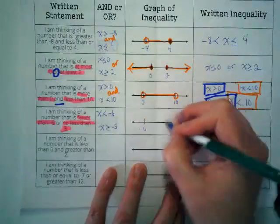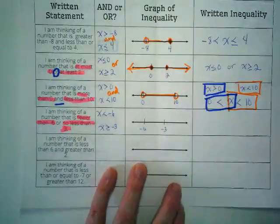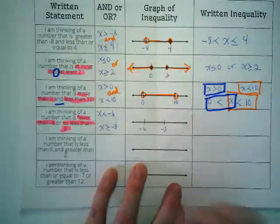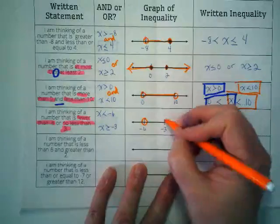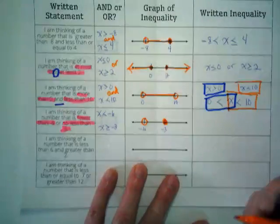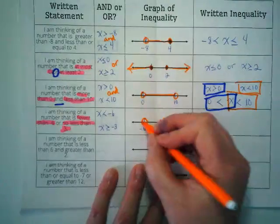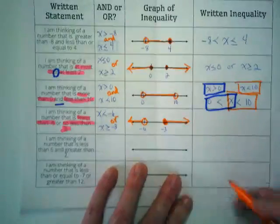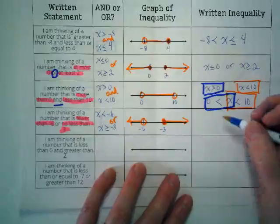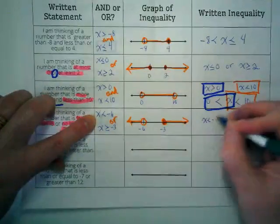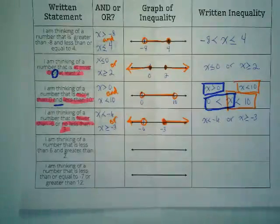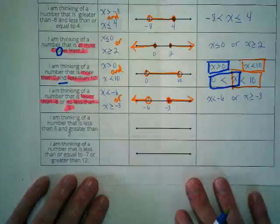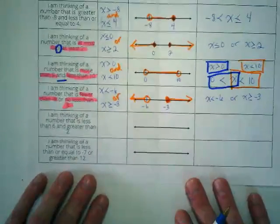So we're going to end up with negative 6 here and negative 3 here. And what's going to happen with the graph? This one is going to get a whole circle, and this one's going to get a filled-in circle. And do they come together or go separately? Separately. By going separately, that means that they are or. Which just means for the written statement, we just take what we put here, and we put the or in the middle. In my mind, I think of the ands as they're working well together, and the ors are arguing and shooting off in different directions.